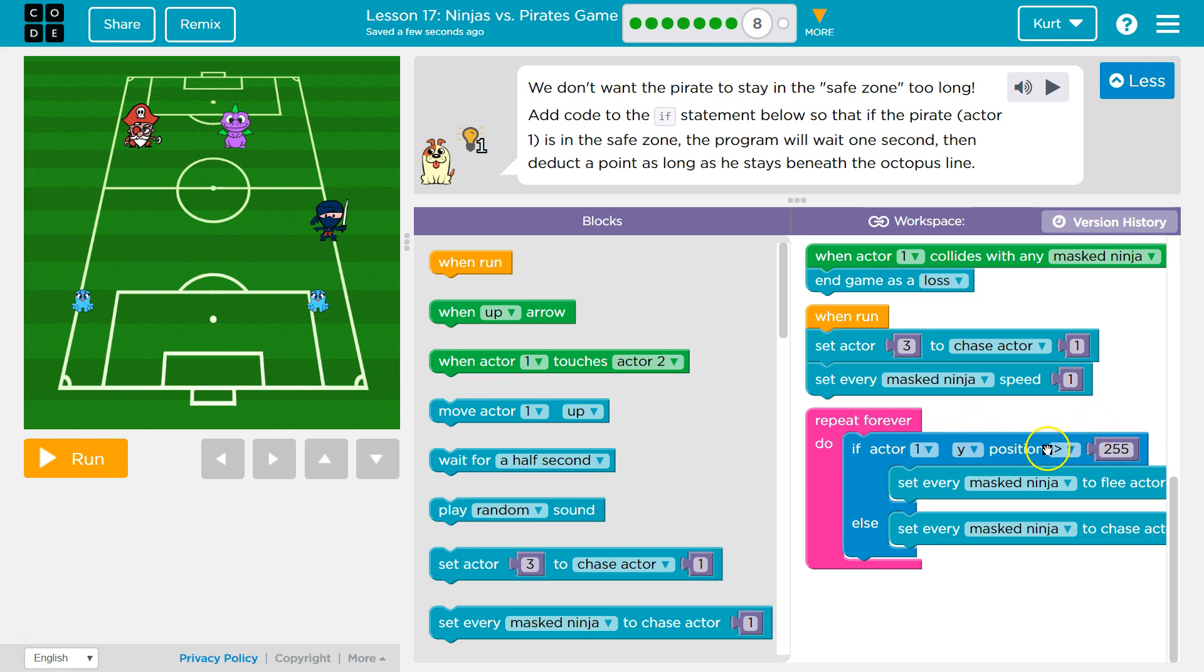And so if we're asking the computer, are pirates down here? If that's true, remember, we run the if statement. We run set every mass ninja to flee. And then we would skip the else because on an if-else, you only run one or the other lines.